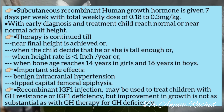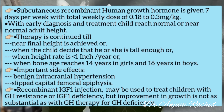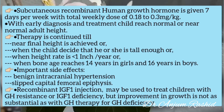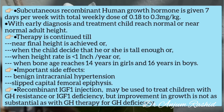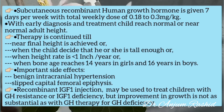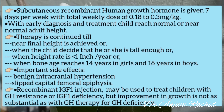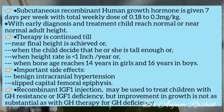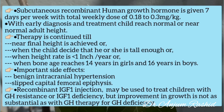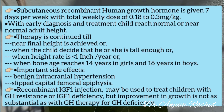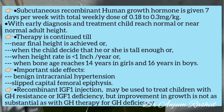Therapy with subcutaneous recombinant human growth hormone is continued until near final height is achieved, or when the child decides they are tall enough, or when the height rate is less than one inch per year, or when bone age reaches 14 years in girls and 16 years in boys.